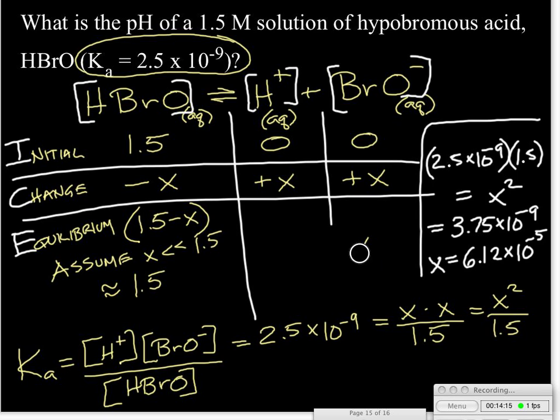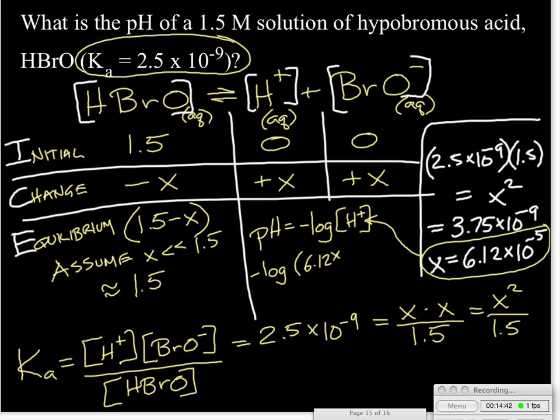And we know that the pH is equal to the negative log of the concentration of the hydrogen ion. We're saying this number over here, our X represents that right there. So to find the pH, we need to take the negative log of 6.12 times 10 to the minus five. And that will give us a number that's equal to 4.21 for our answer.